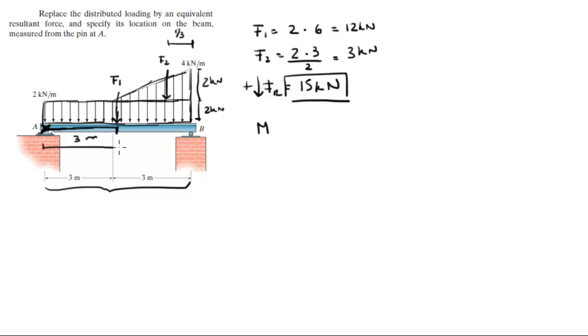And the second one acts one-third from this trailing edge of the triangle which means that this will be 3 divided by 3 is 1. So this is from here to here is 1 meter.